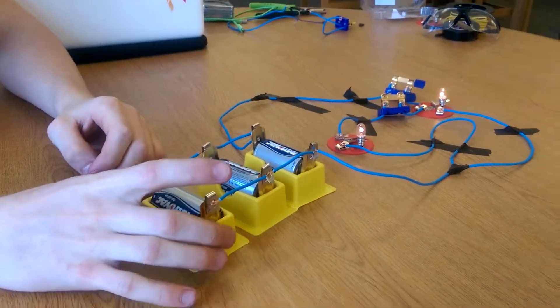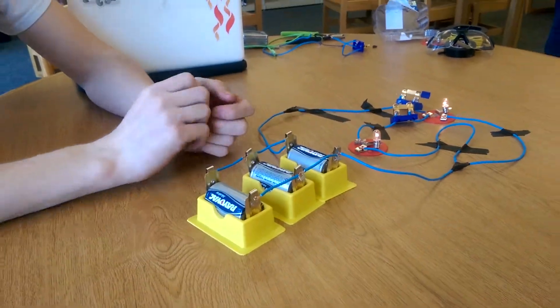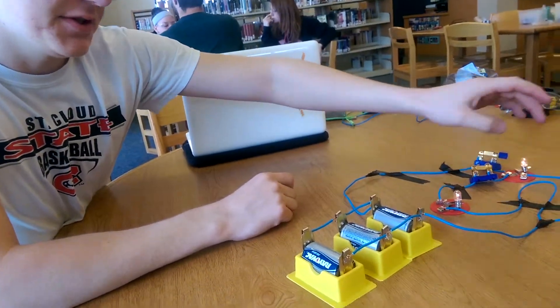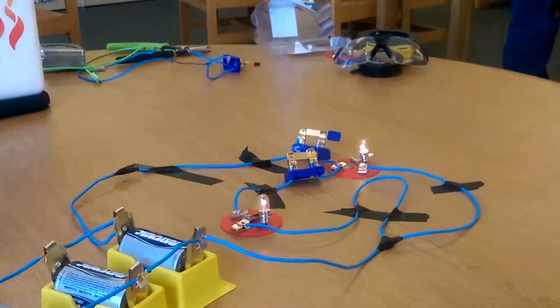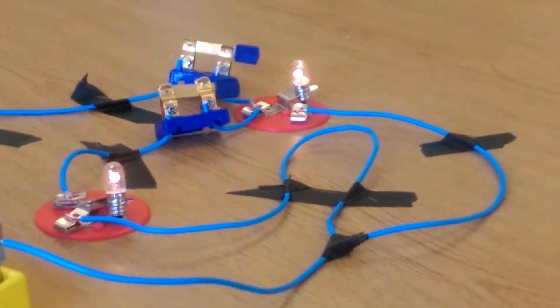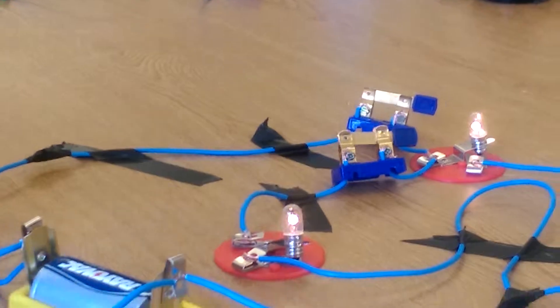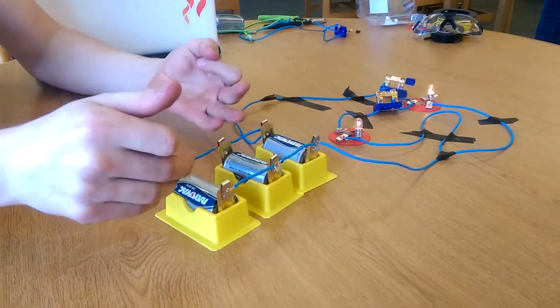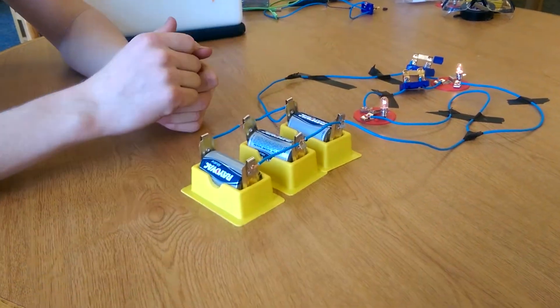We have our batteries in a parallel circuit and we also have our lights in parallel. So our batteries are all 1.5 volts when they're hooked together, but they have triple the milliamps, triple the power.